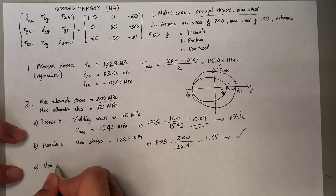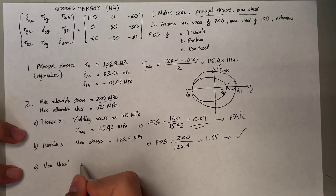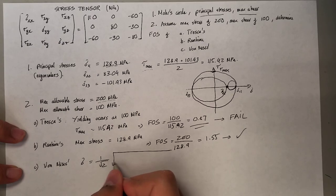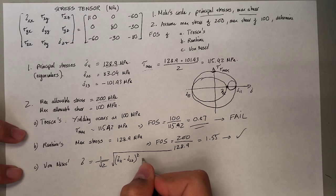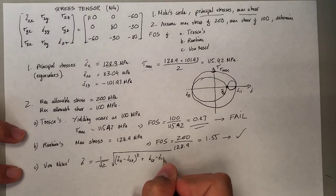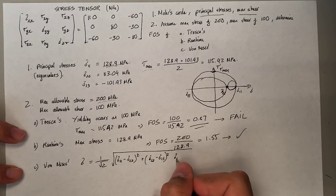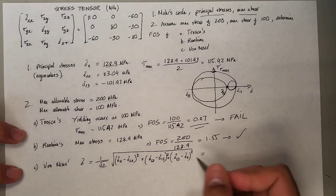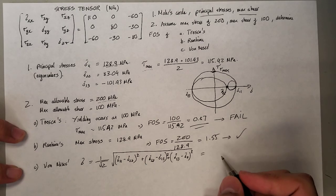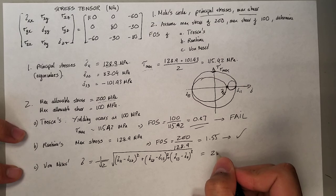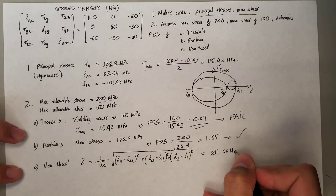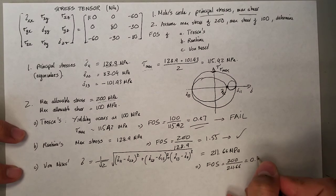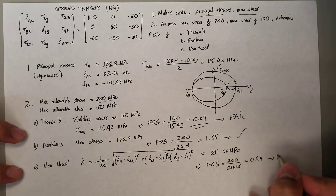The last one is the von Mises formulation. The von Mises stress is given by its standard formulation — you should all be familiar with this, especially from the last exam where few students got it right, so be careful with the formula. Plugging in the principal stresses, the von Mises stress turns out to be 211.66 MPa. The factor of safety is 200 divided by 211.66, which is approximately 0.94, less than one — so this is a fail scenario.